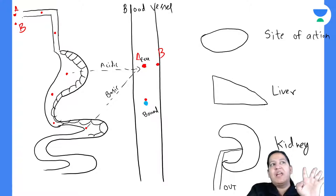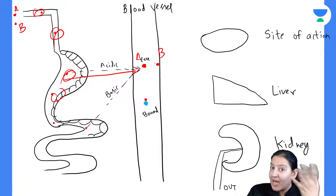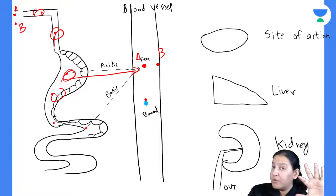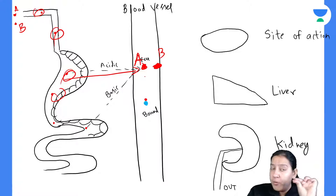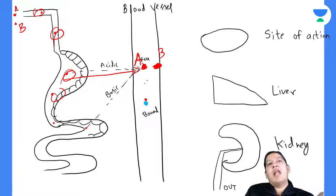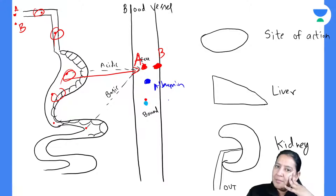If both drugs are acidic — drug A acidic and drug B acidic — both are absorbed from the stomach and both reach the blood. Drug A and Drug B are both present in the blood. Since both are acidic, both will fight for albumin. There is competition between the two drugs as to who will bind with albumin.